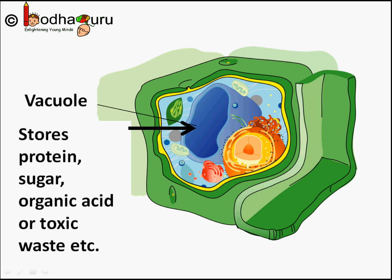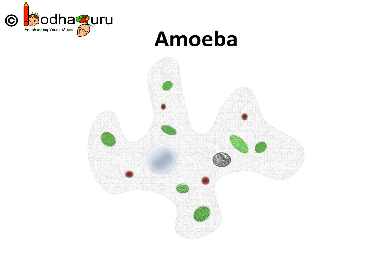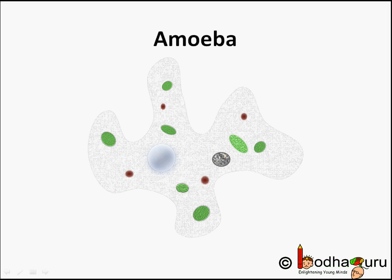Various organic acids are also stored in vacuoles. In single-celled organisms such as amoeba, the food vacuole contains food items that amoeba has consumed. In some unicellular organisms, specialized vacuoles also play an important role in expelling excess water or waste from the cell.